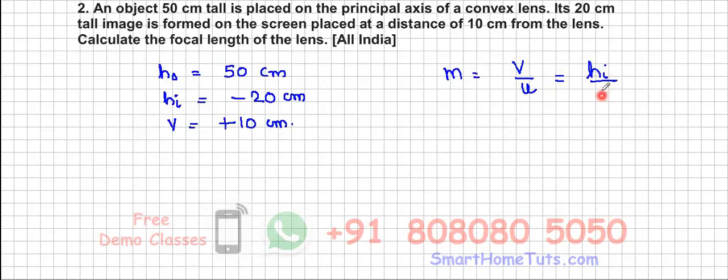I'll just substitute these values. V is 10, U you are supposed to find. Height of image, this is minus 20. Height of object, this is 50. I can straightaway cancel this out, so this U will come over here.